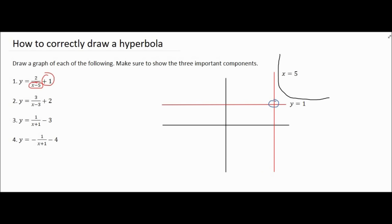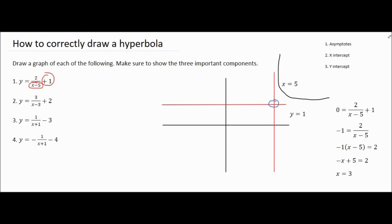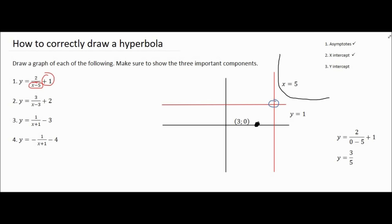To find the x-intercept, make y equal to zero. Take the plus one to the left-hand side, then multiply by the bracket to get the x minus five alone. Multiply in and solve for x to get an x-intercept of three. For the y-intercept, make x equal to zero — plugging that in gives y equals three over five, which is zero point six. We can locate both intercepts and now draw the graph.